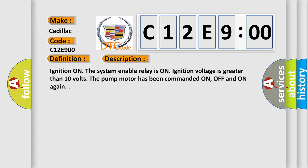Ignition on, the system enable relay is on, ignition voltage is greater than 10 volts, the EBCM detects the pump motor has been commanded on, off and on again.